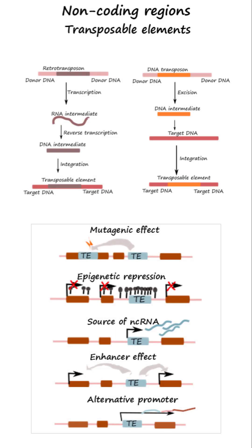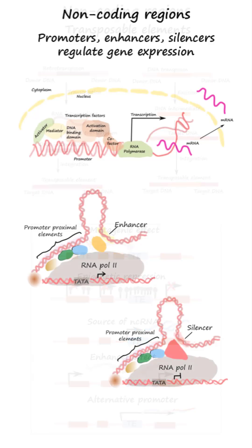Transposable elements — DNA segments capable of moving within the genome — have functions such as spreading epigenetic silencing to nearby genes, giving rise to non-coding RNAs such as microRNAs, long non-coding RNAs, and PIWI-interacting RNAs, etc.